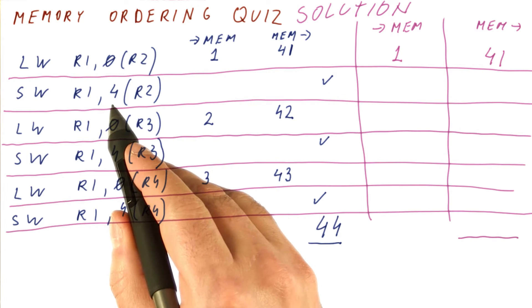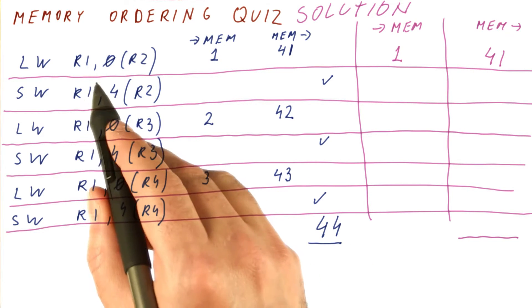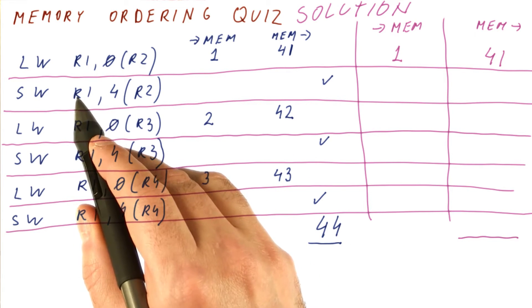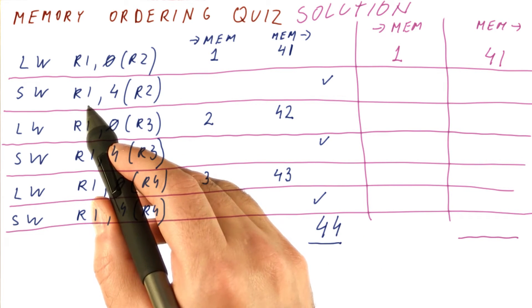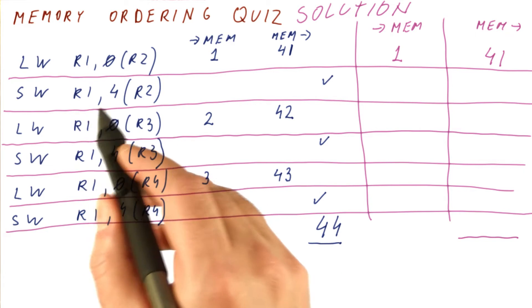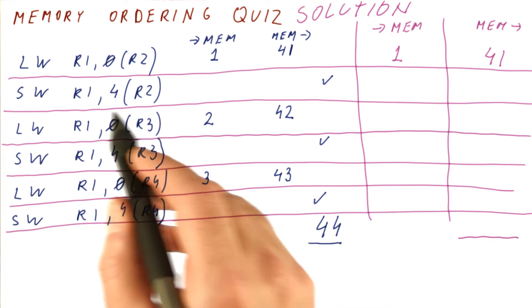This store, however, cannot proceed fully because we don't know what the value is until cycle 42. So in cycle 42, this store finally figures out what the address and the value are, so now this load can be considered done.